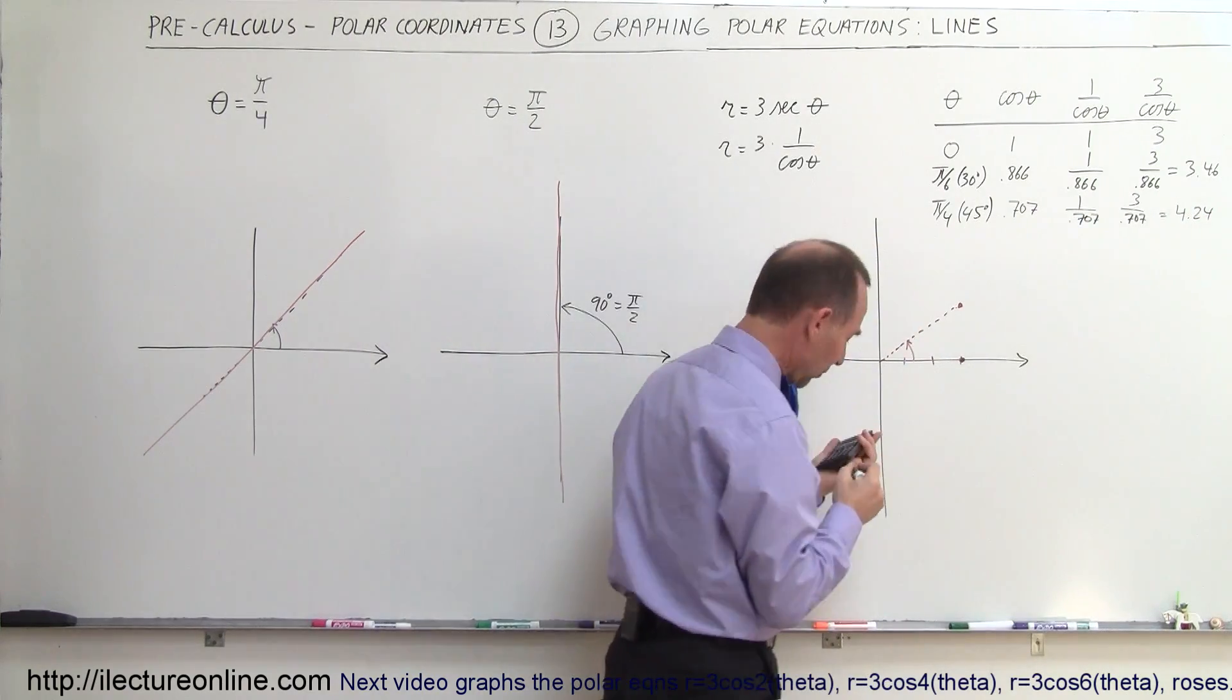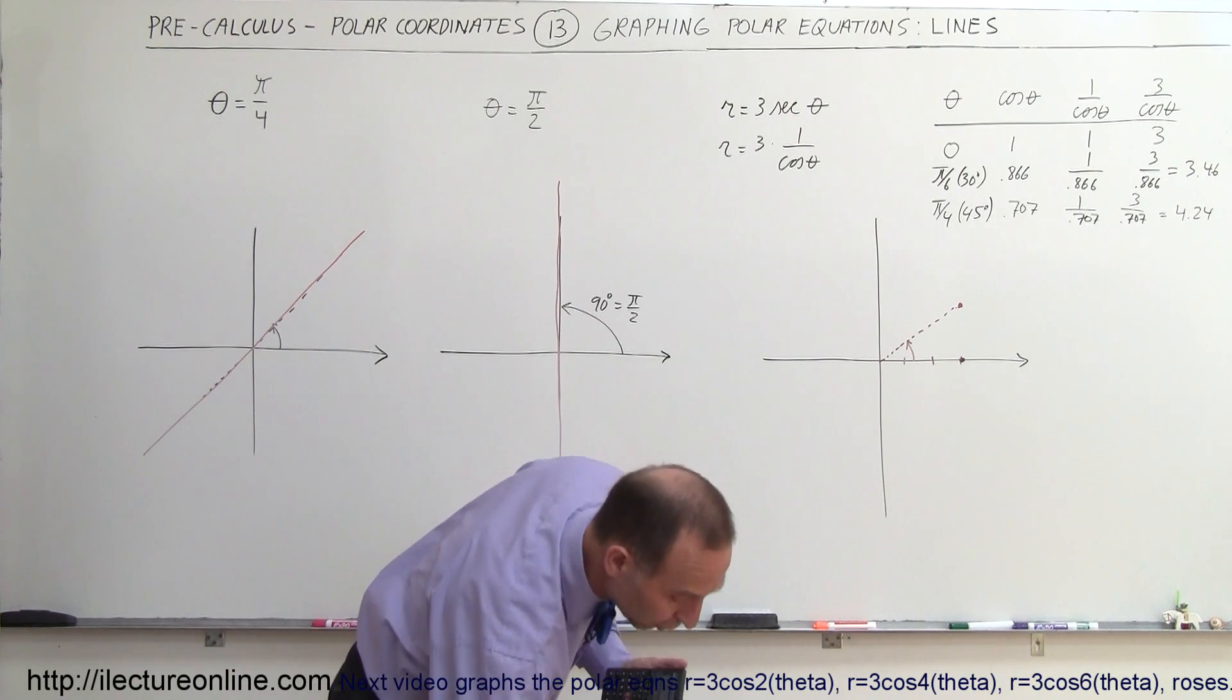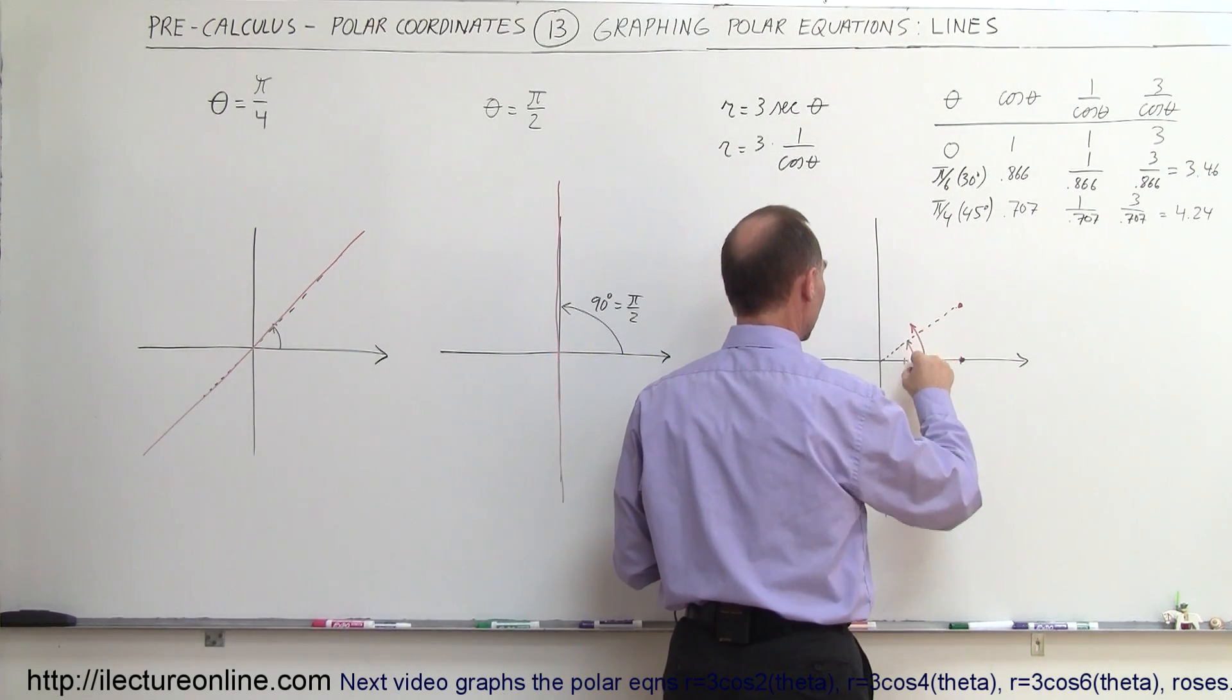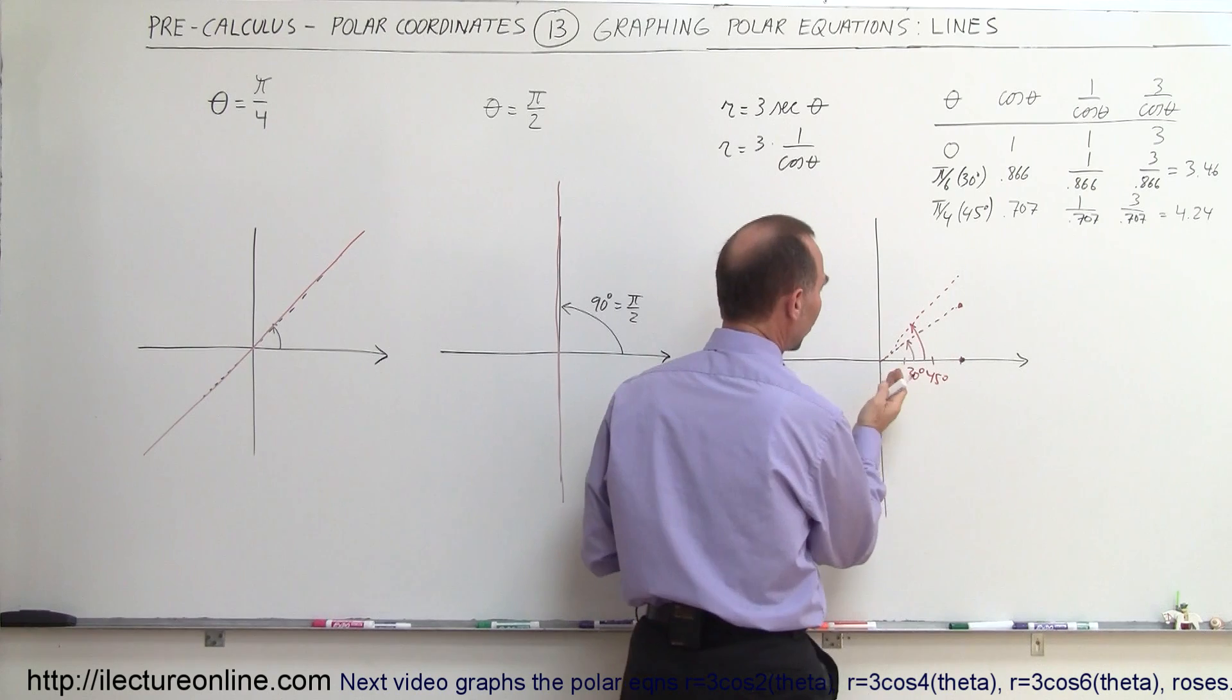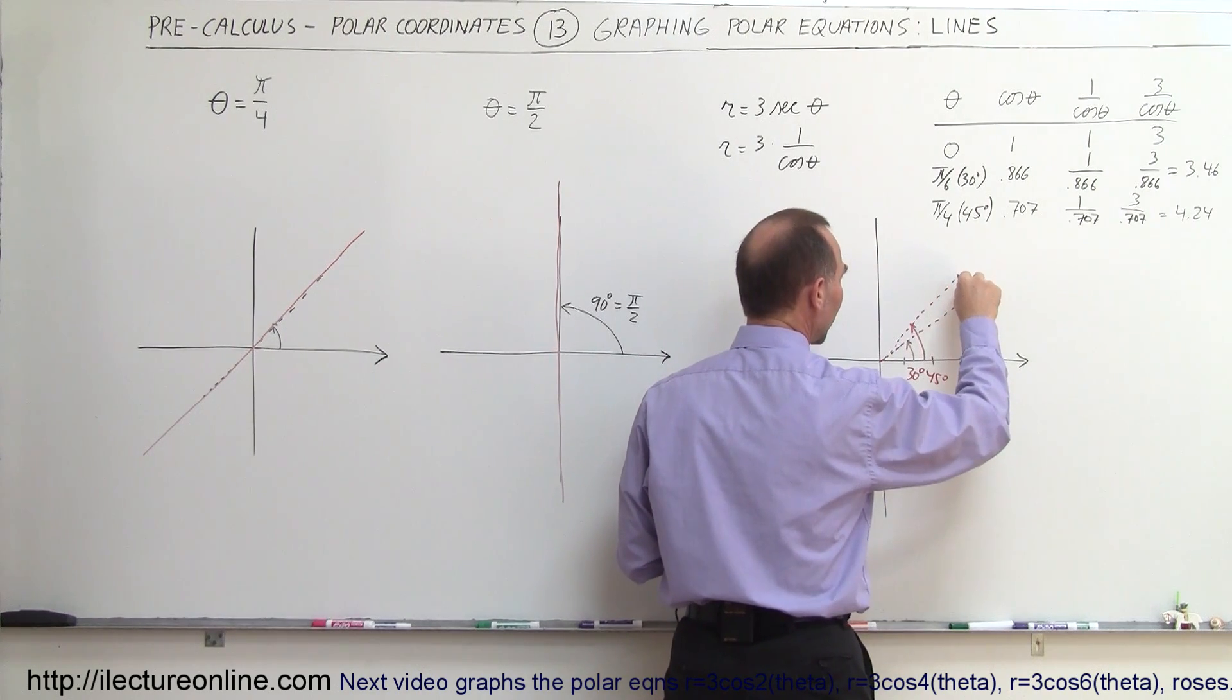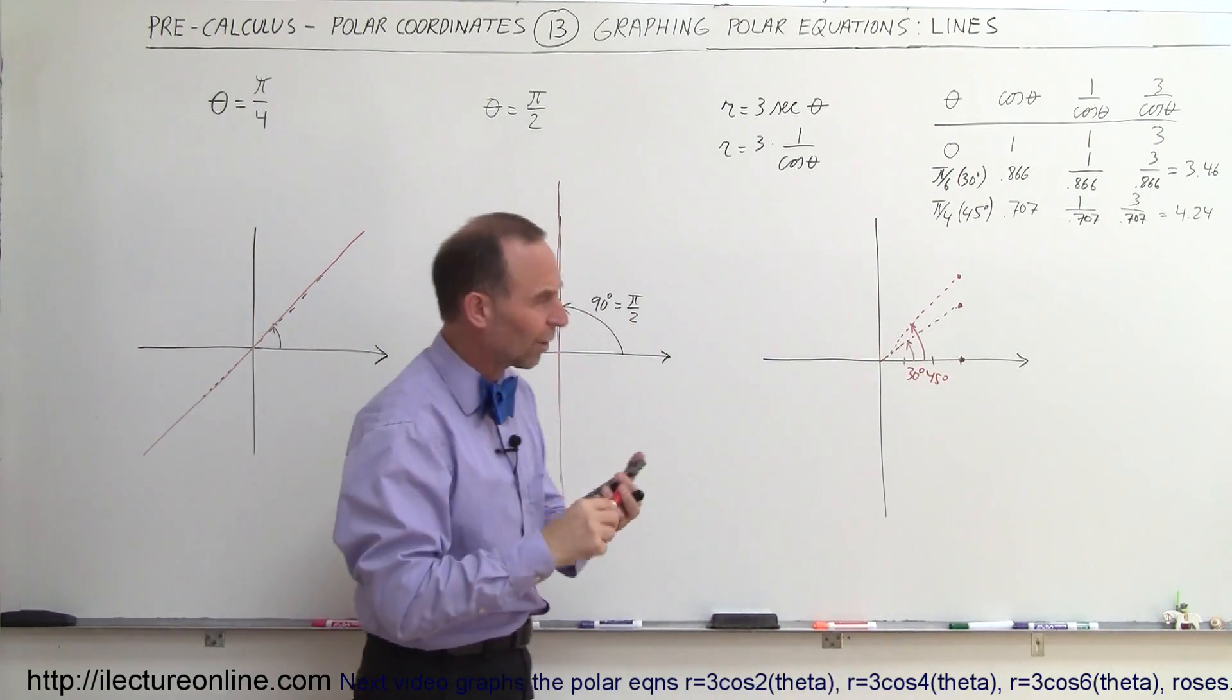So at a 45 degree angle, we need to go out 4.24 units away from the origin. So this was 30 degrees. This is 45 degrees. So we have a dashed line like this, and then if we go out 4.24 units, we get a dot right about there. And you can see that it's beginning to show like it is a straight line.